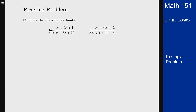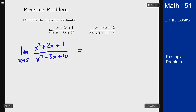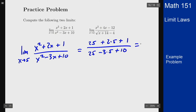We'll start with the first one. We realize we can't factor the denominator — it does not factor in any reasonable way, and the discriminant formula confirms it won't factor at all. So we just plug in 5: we get (25 + 10 + 1) / (25 - 15 + 10), which gives 36 over 20, simplifying to 9/5.